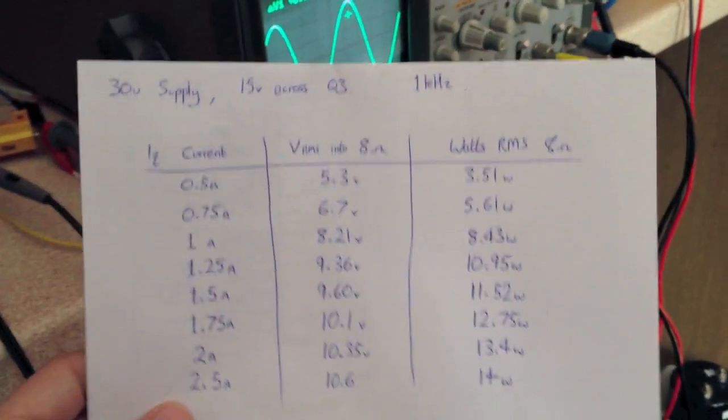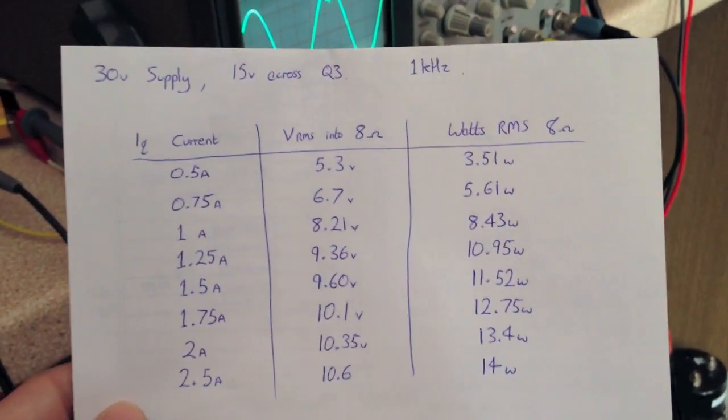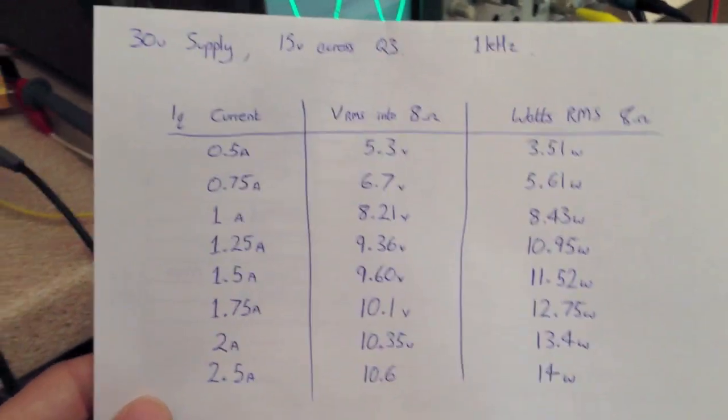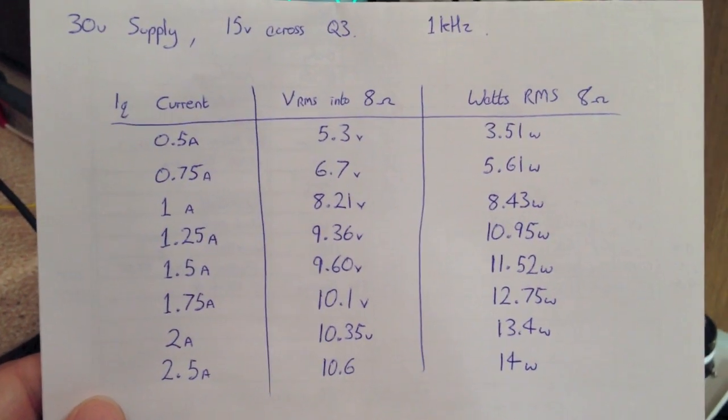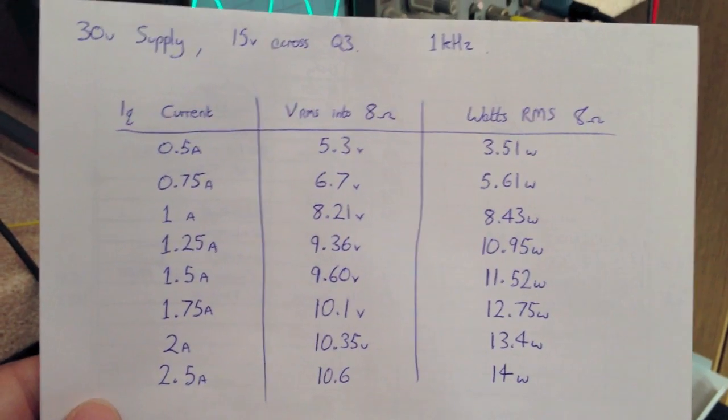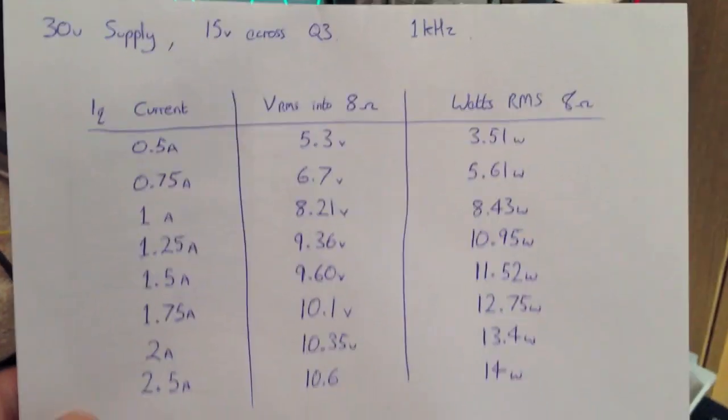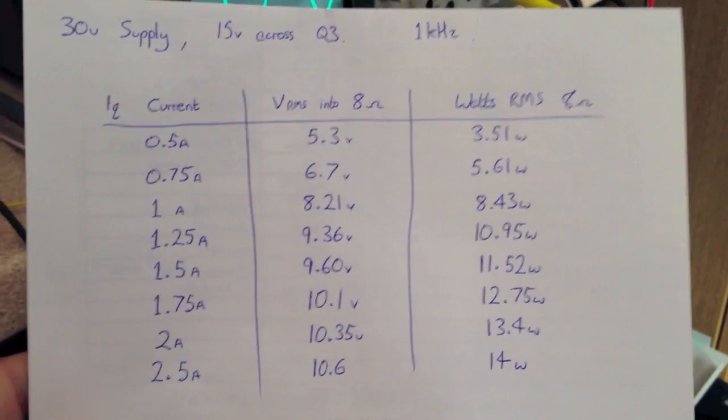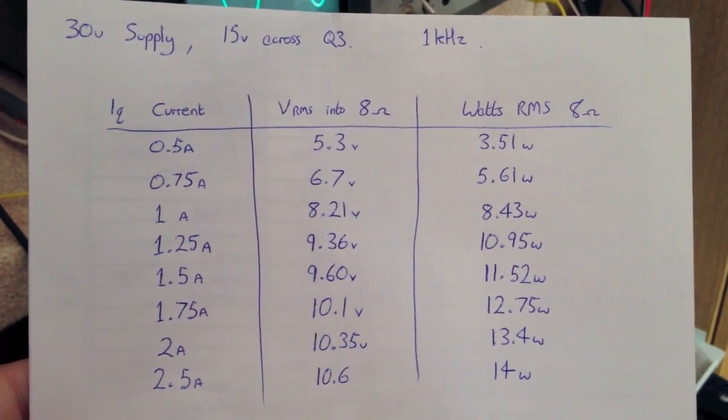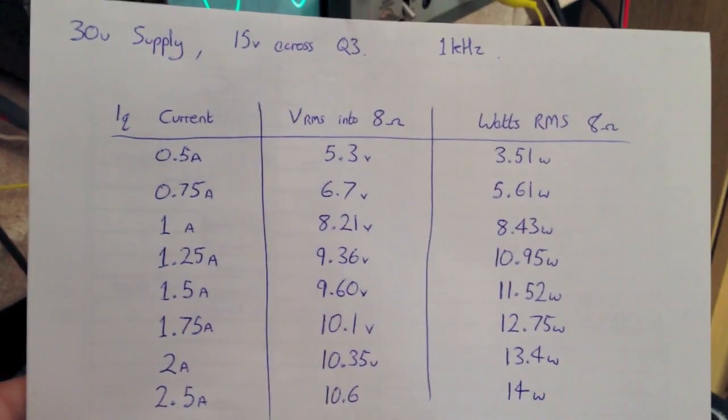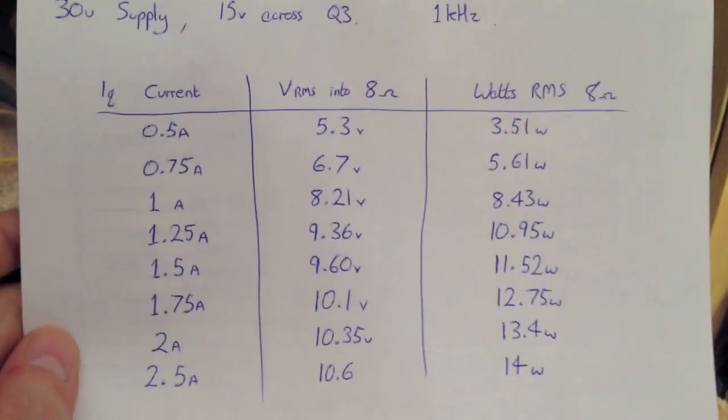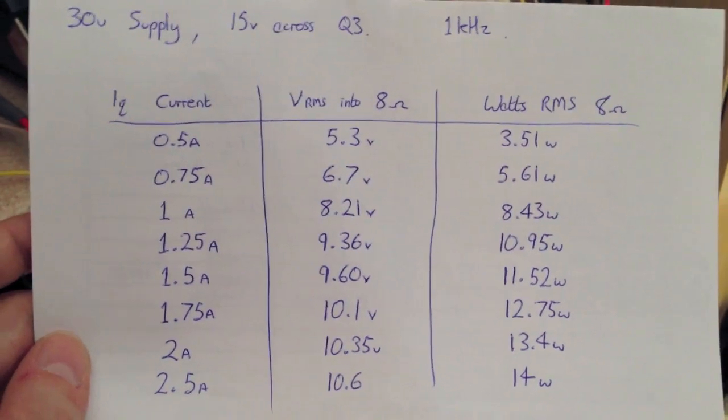This is some info on how I set up my Zen amplifier. There's a little table I made up of different output wattage into 8 ohms RMS for different idle currents, all at 30 volt power supply. Half an amp idle current gives 3.5 watts into 8 ohms, going up to 2.5 amps giving 14 watts into 8 ohms. The voltages are the voltage across the 8 ohm load in RMS. I've set mine to one amp idle current which gives me about 8.43 watts into 8 ohms.